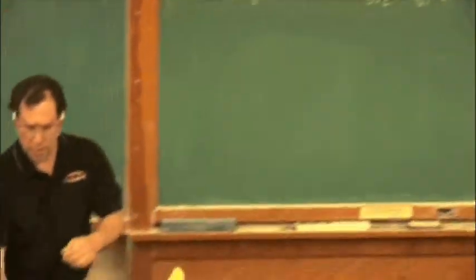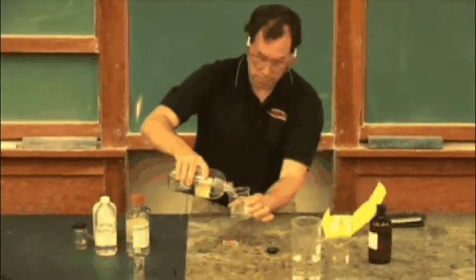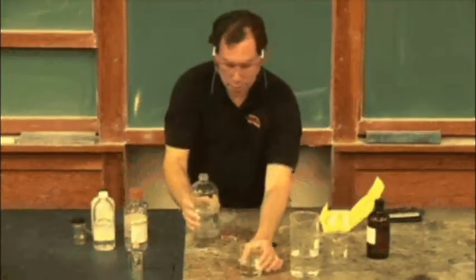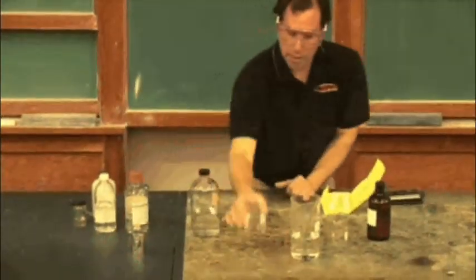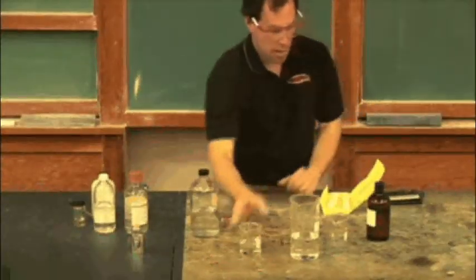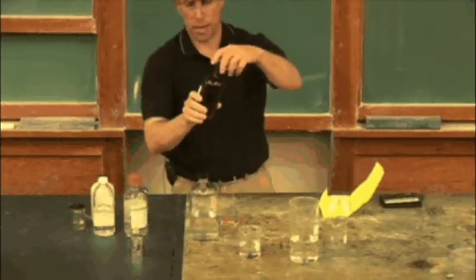I have a solution of some lead nitrate, lead 2 plus, Pb 2 plus, and nitrate NO3 2 minus dissolved in water. And in the brown bottle, to protect the iodine, which is photochemically active, light will affect it.